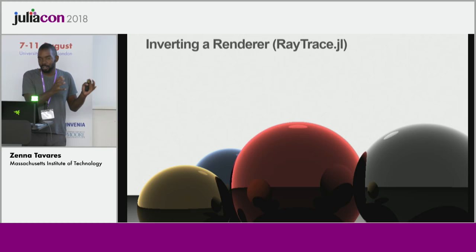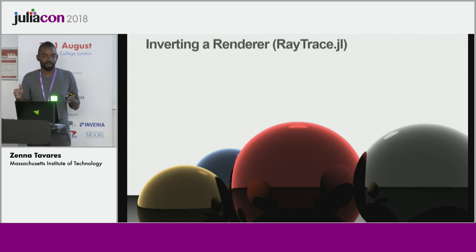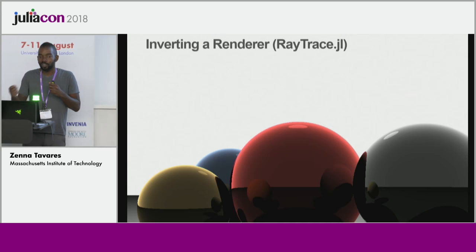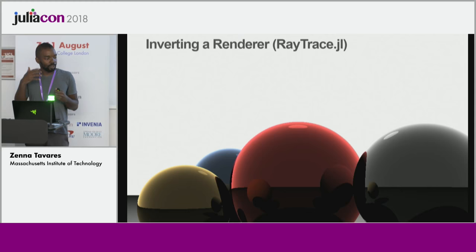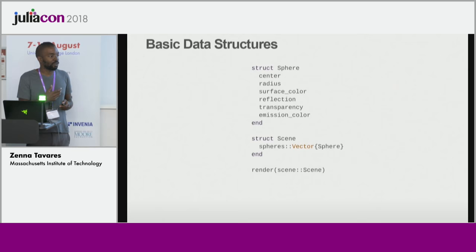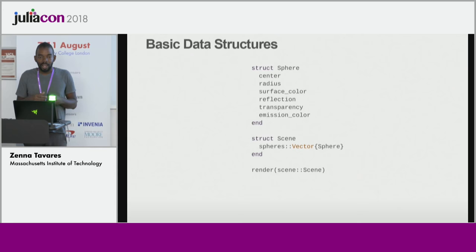Here is a more interesting example: a rendered image. This ray tracing module implemented in Julia simulates light through a scene and generates an image. A renderer takes a 3D scene and produces a 2D image, but what we often want is the inverse — going from a 2D image to a 3D reconstruction. This is useful for robots interpreting camera input, or modeling how the human mind reconstructs 3D geometry from 2D images.